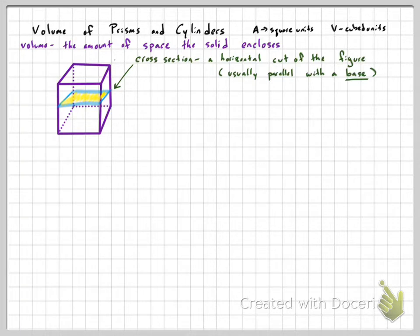Now the reason why a cross-section is important is because it's the exact same size as your bases. Because remember, a prism, as you travel up and down, think of an elevator shaft. As the elevator goes up and down, the size of the elevator shaft is the same from the top floor to the bottom floor. So if I travel up and down this prism, and I always make this horizontal cut, every cross-section will be exactly the same size.